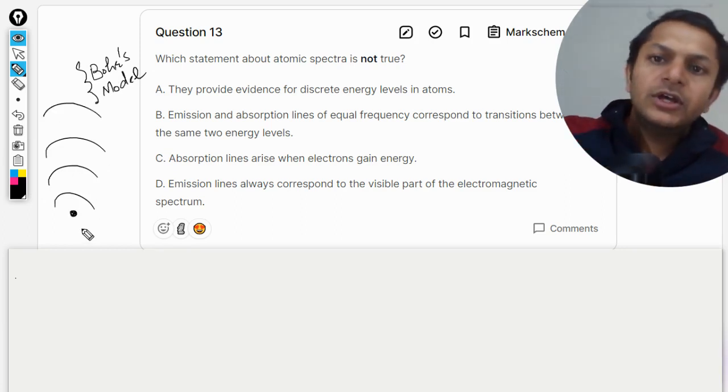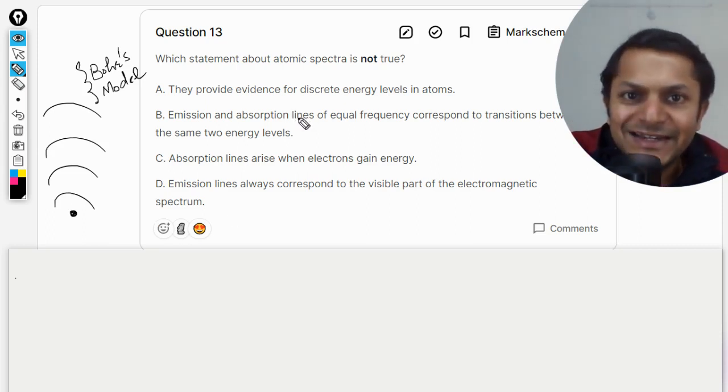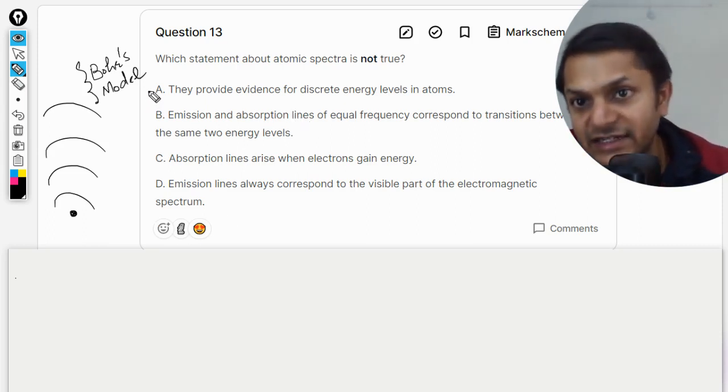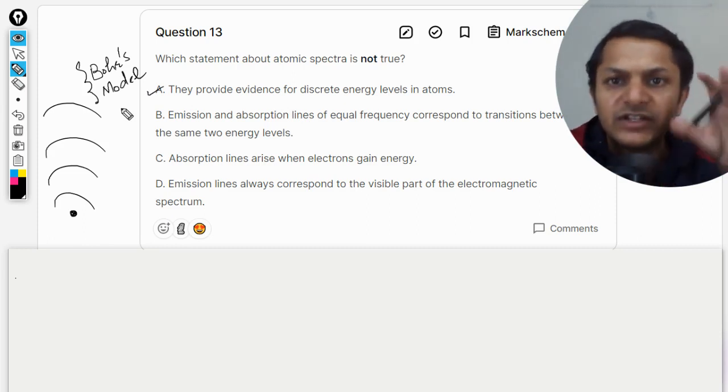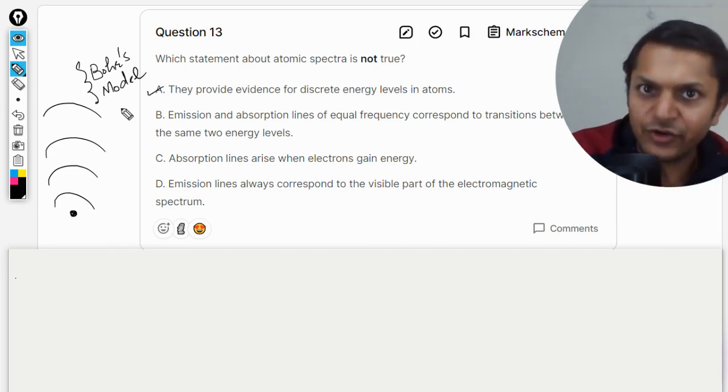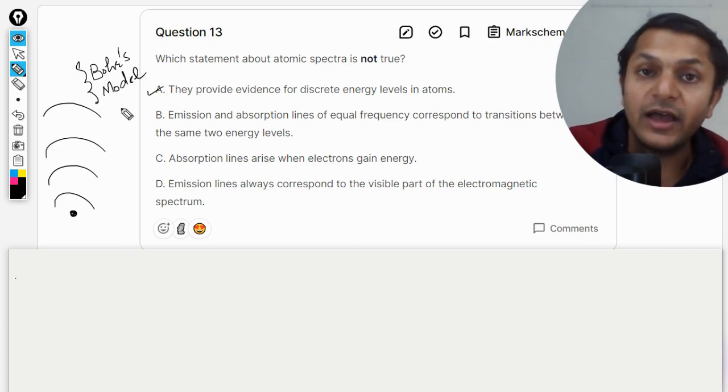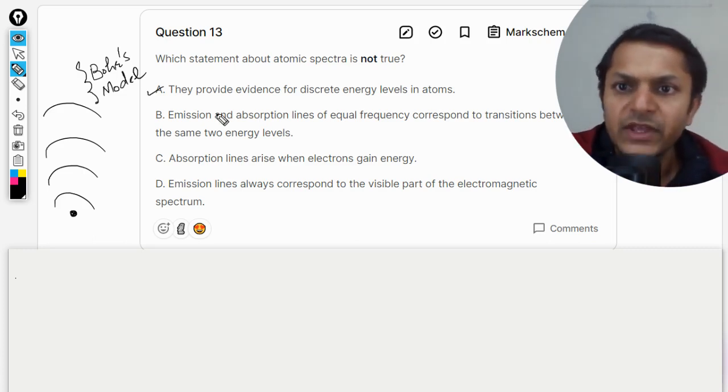They provide the evidence for discrete energy levels in the atoms. Yes indeed, no problem at all. Definitely because of this model only, from the atomic spectra that we get emission spectra and absorption spectra, we jump to this conclusion that there must be energy states.